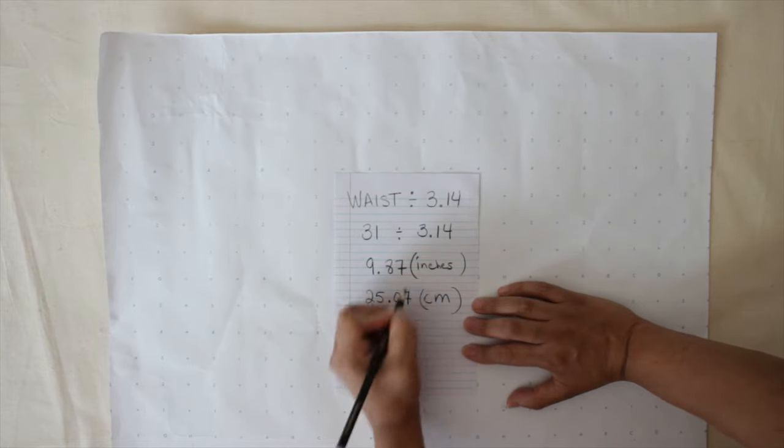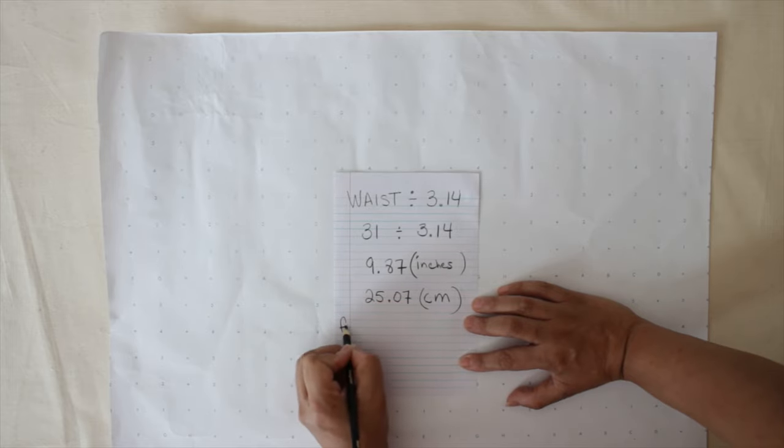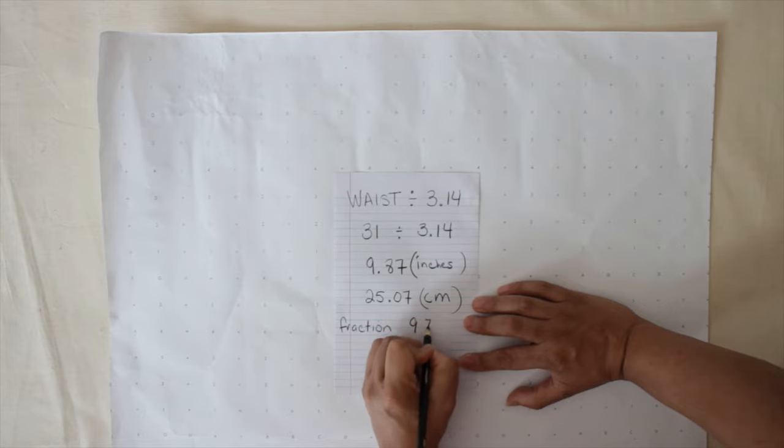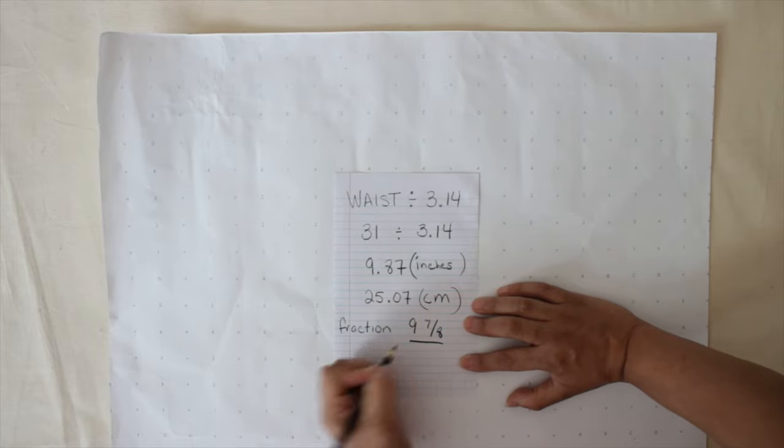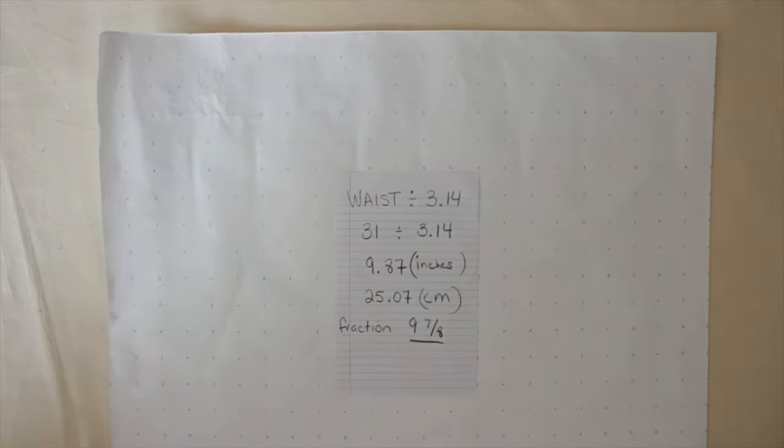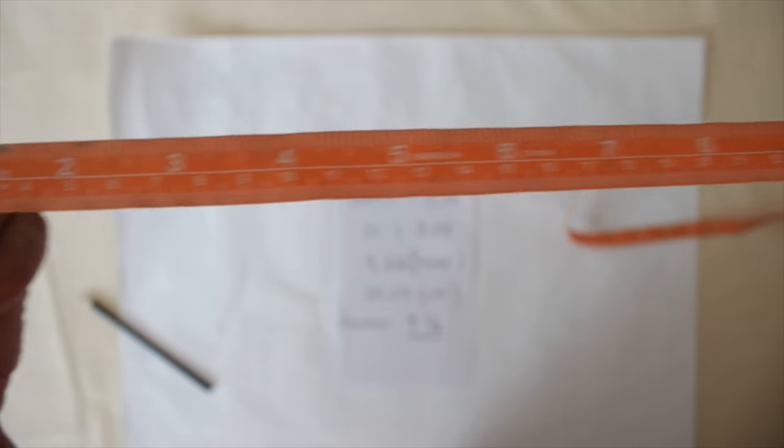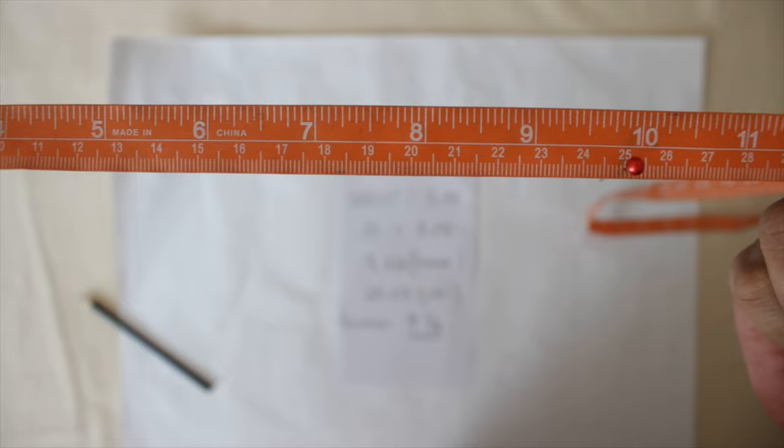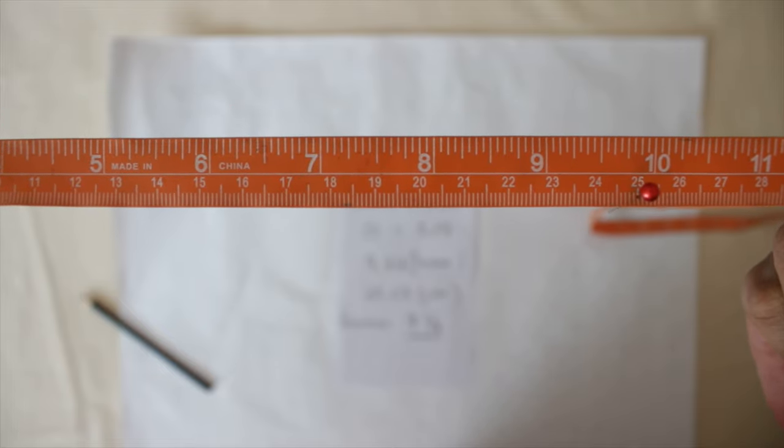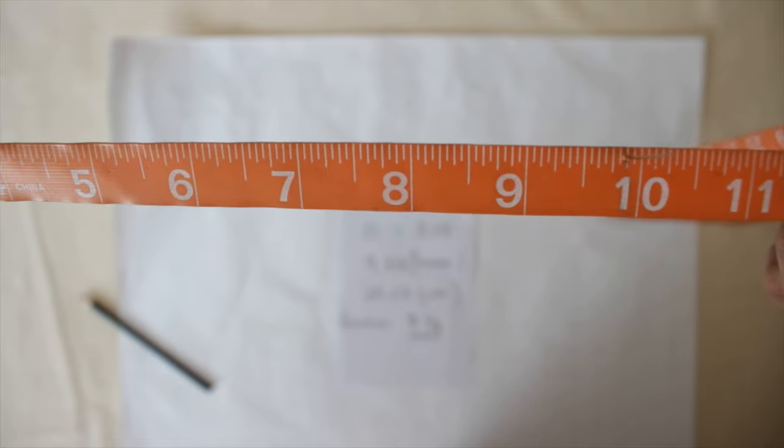Sometimes people don't want to deal with centimeters either. They want it in a fraction. So the fraction is 9.78. How did I know it's 9.78? You take the measuring tape and you put the pin in the 25 centimeter mark and flip it over, and you will see that it's very close to 9.78.